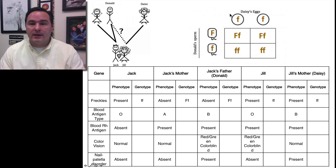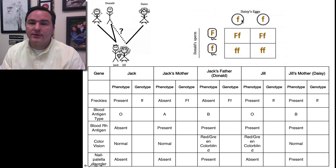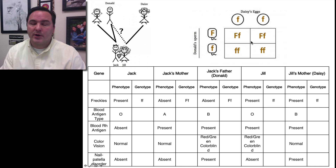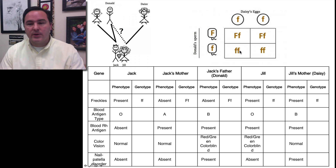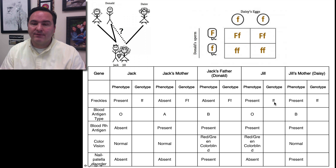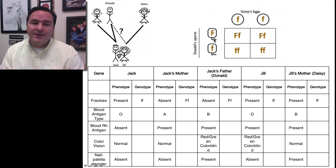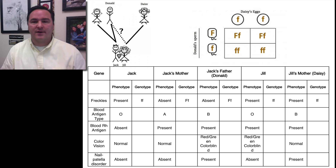Now we can look at the genotypes of Daisy and Donald. Daisy is little f, little f, and Donald is big F, little f. The possible offspring from this cross can be either big F, little f, or little f, little f. So, is it possible that Donald is Jill's father? Jill is little f, little f, so it is possible. This does not mean that he is — it's just that it's possible. Had Donald been big F, big F, we could have already ruled him out as Jill's father.